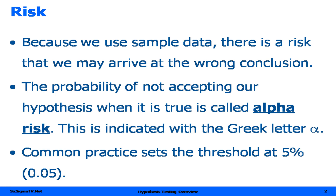The statistical term for the probability of not accepting our hypothesis when it is in fact true is called alpha risk. Common practice is to set that risk threshold at 5% or 0.05. In cases where we have life-critical applications such as aerospace or medical, we can set that lower.